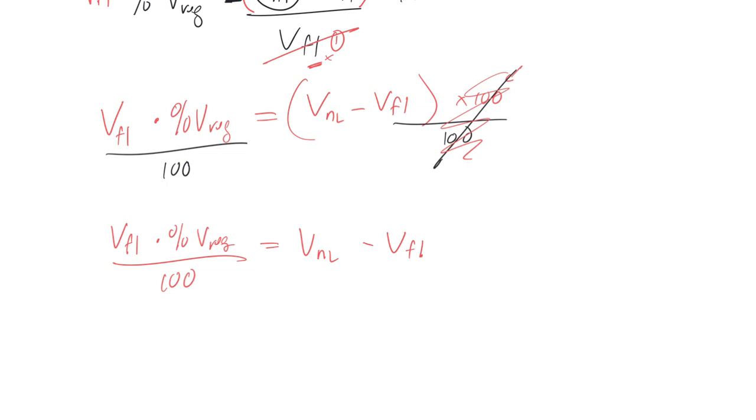And if we're searching for voltage no load, then I want to get rid of this. So I do the opposite operation again. This is minus, so I'm going to add voltage full load on this side and add voltage full load on this side. So I would go voltage full load times percent voltage regulate divided by 100 plus voltage full load is equal to voltage no load.